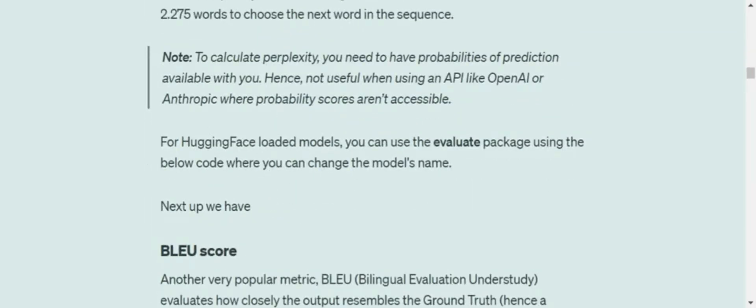To calculate perplexity, you need to have probabilities of prediction available with you. Perplexity can't be calculated using APIs because APIs directly give you the output without probabilities. If you're using a local LLM or HuggingFace models, you should be able to get the probabilities. For HuggingFace models, you can use the Evaluate package which provides this metric.